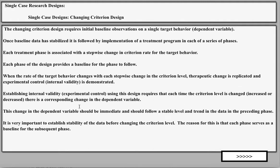Establishing internal validity or experimental control using this design requires that each time the criterion level is changed — either increased or decreased — there is a corresponding change in the dependent variable. The dependent variable should move to that level and stabilize. This change should be immediate and follow a stable level and trend in the preceding phase. It's very important to establish stability of the data before changing the criterion level, because each phase serves as a baseline for the subsequent phase.